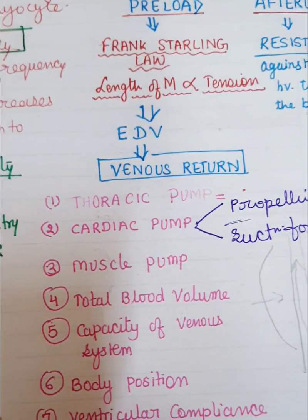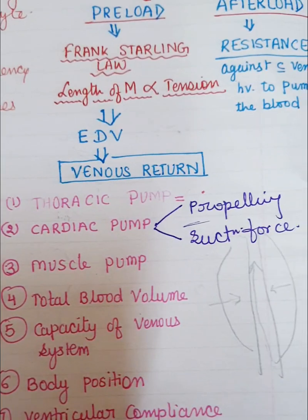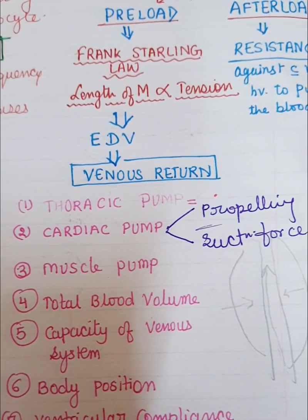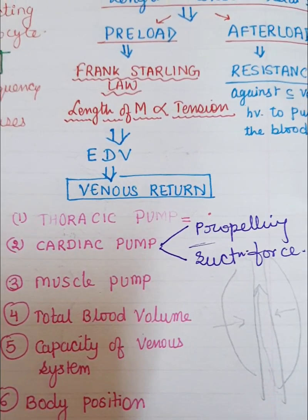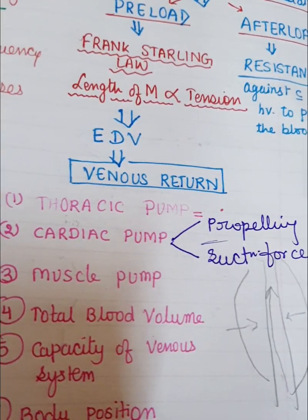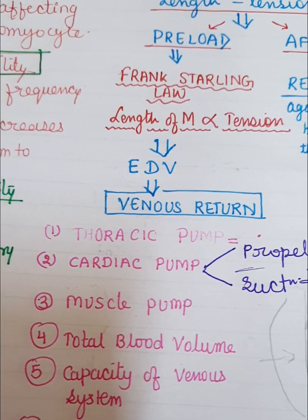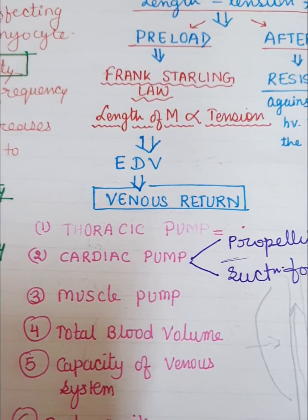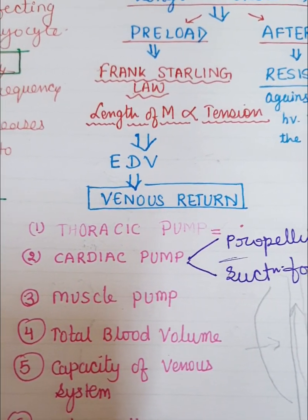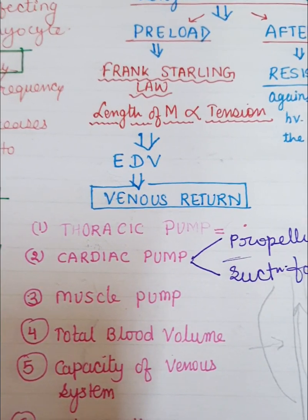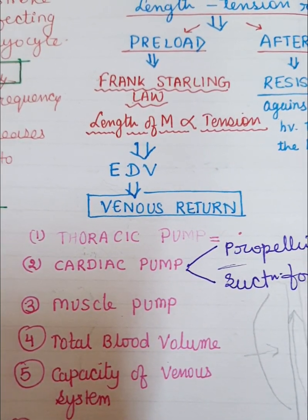Total blood volume also affects venous return — an increase in total blood volume increases venous return. Regarding the capacity of the venous system: if veins are relaxed and dilated, they accommodate blood within them and are unable to propel it forward. When venous tone increases, it increases venous return. Regarding body position: in the standing position there is peripheral pooling of blood, but moving to the recumbent or supine position increases venous return.